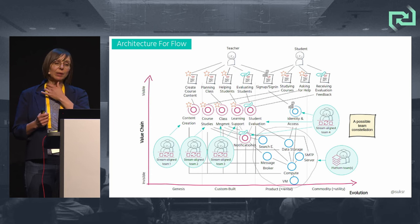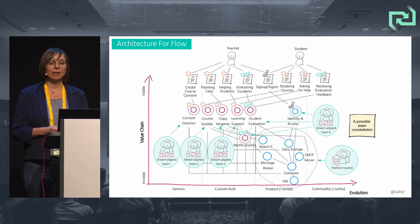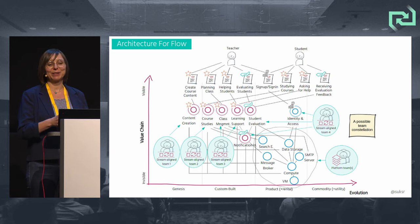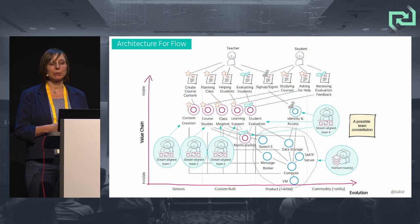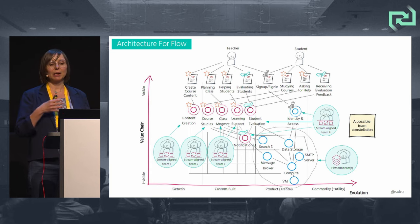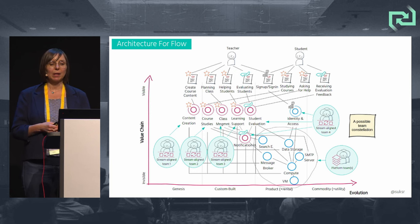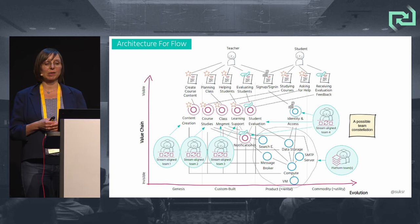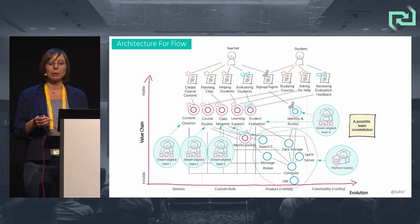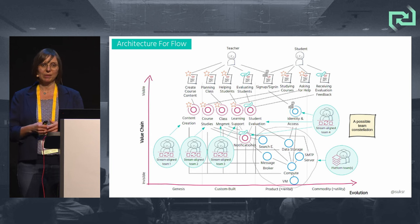This previous consideration might result in a very first draft of team constellation: the bounded contexts are going to be handled by multiple stream-aligned teams, and the infrastructure components in this example by one or multiple platform teams. We will address the platform teams a little bit later.